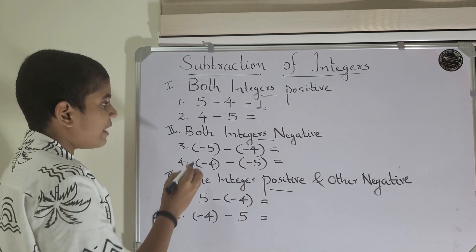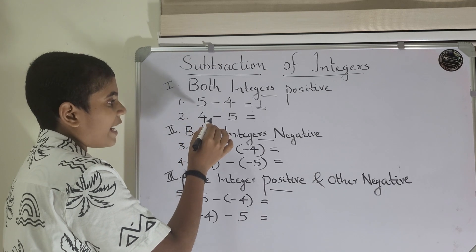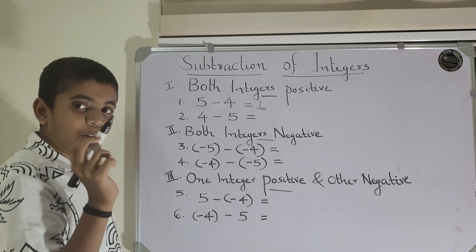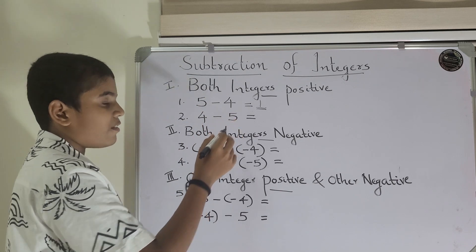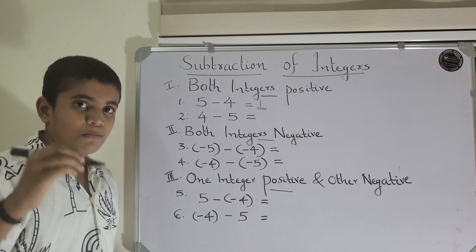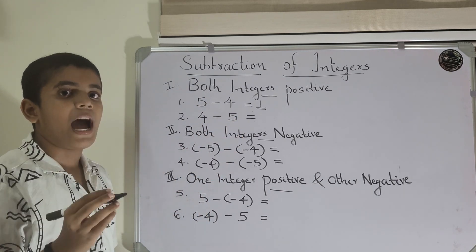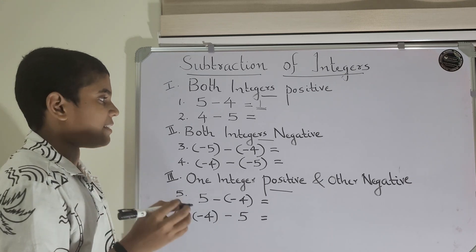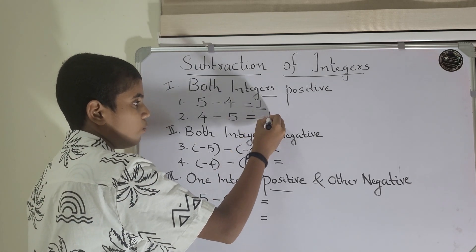Next, it is 4 minus 5. Here, you can notice that 4 is smaller than 5. So, you need to subtract the smaller number from the bigger number and put minus 1. So, it will be minus 1.